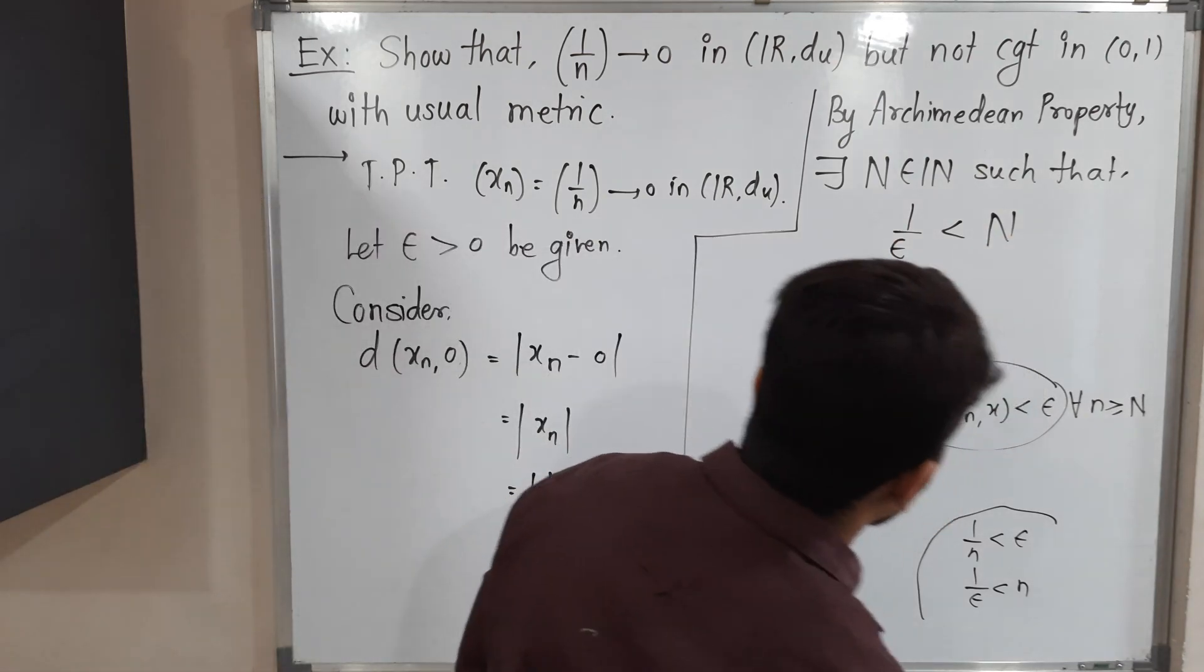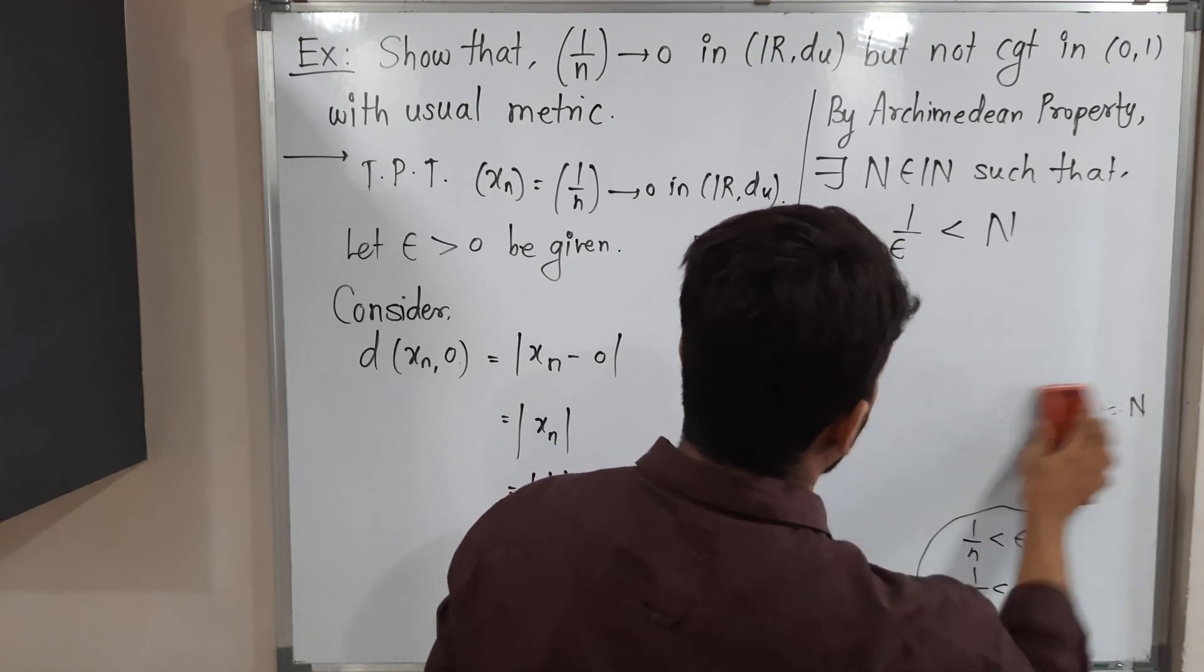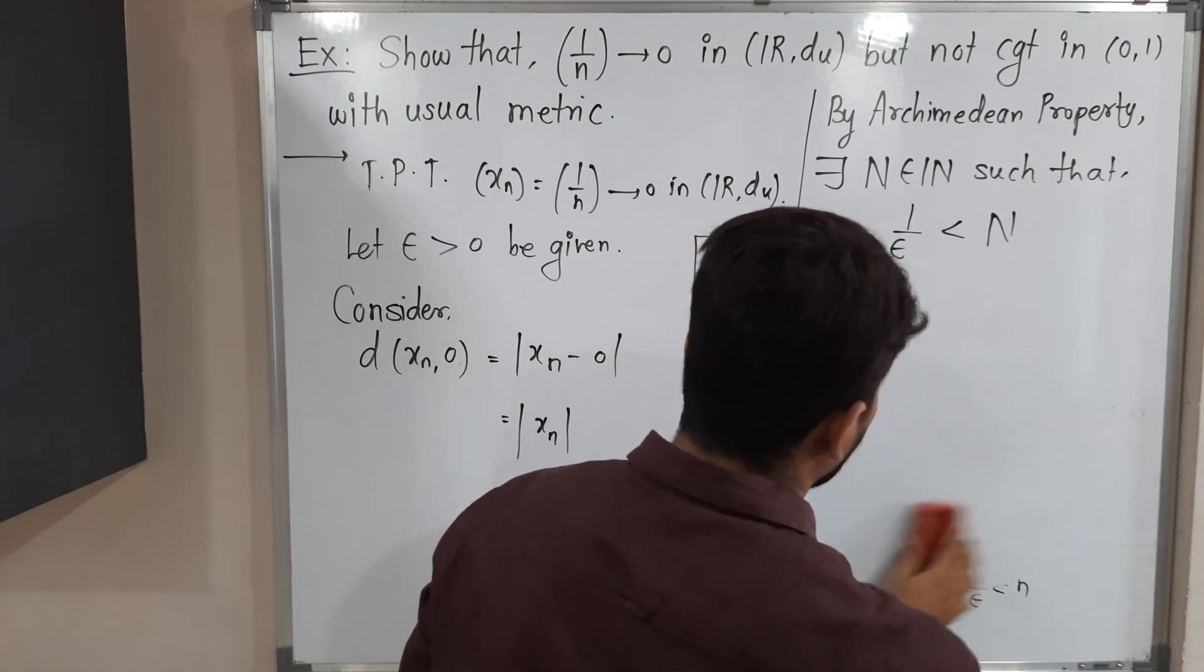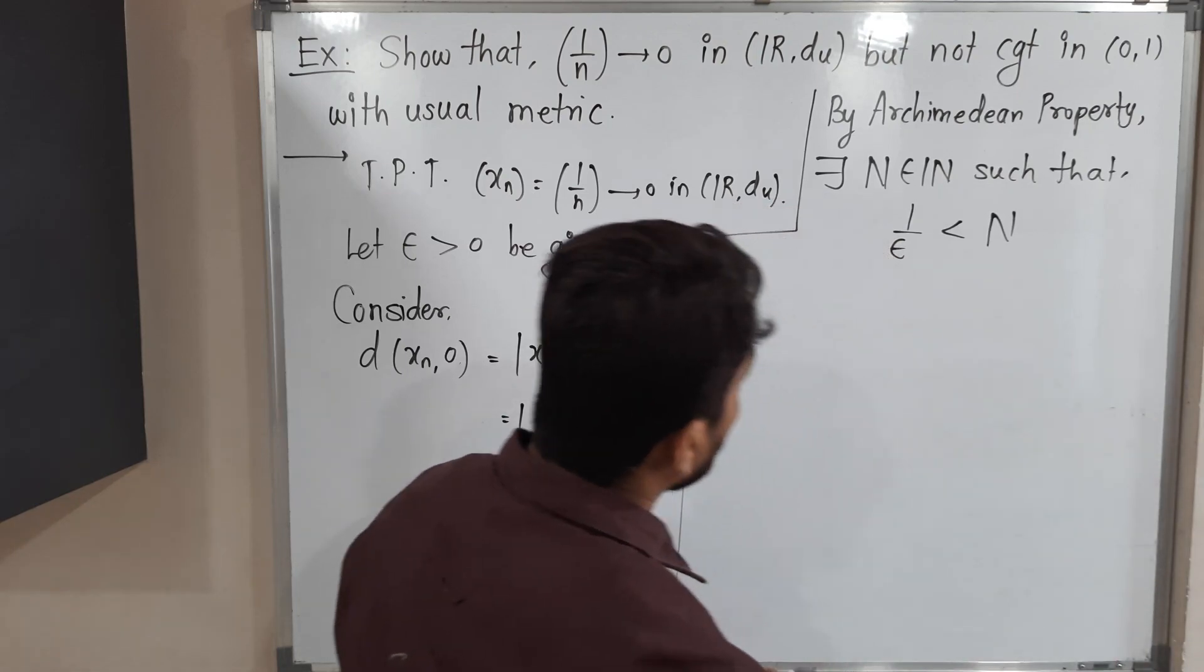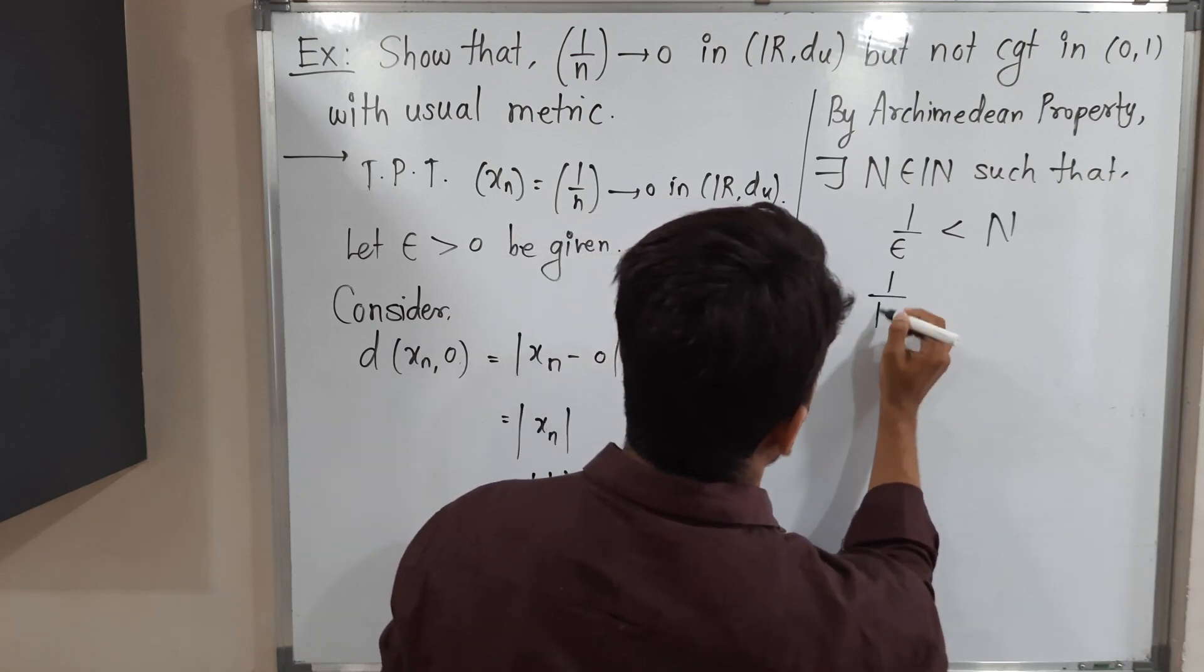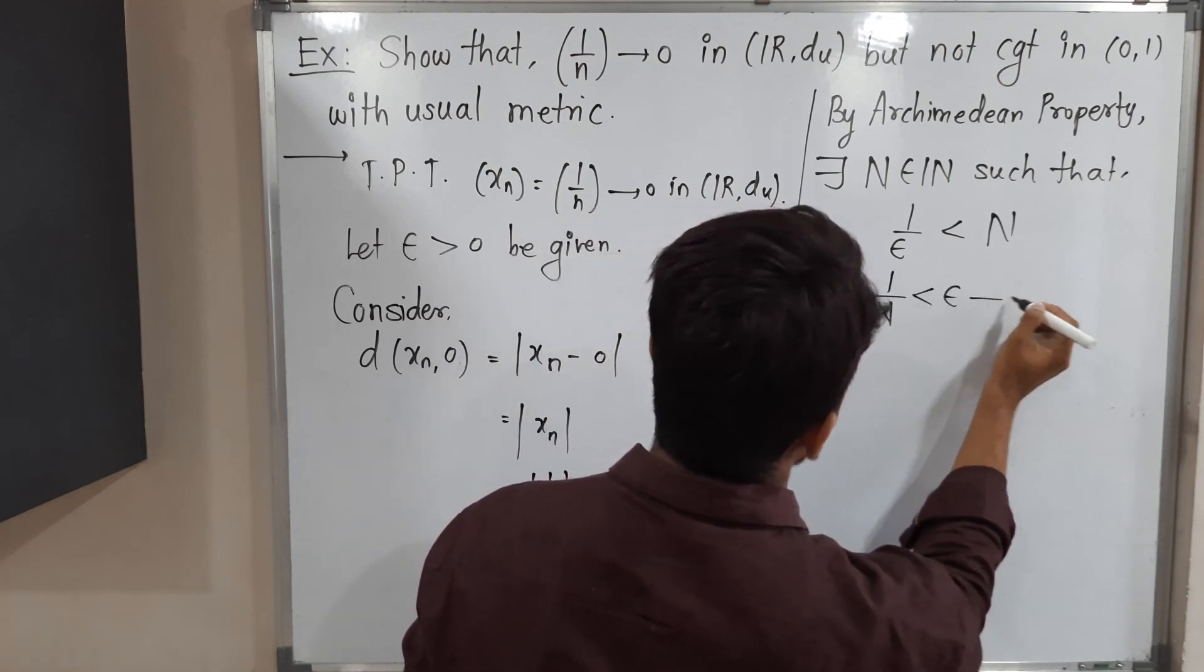Let us interchange them. If you interchange we will have 1 by capital N less than epsilon. This is equation 2.